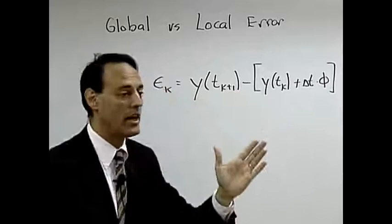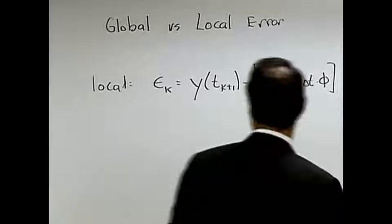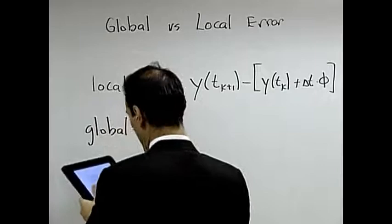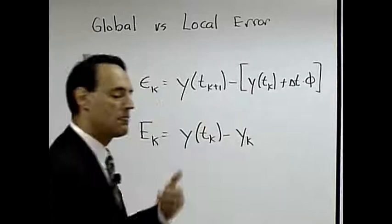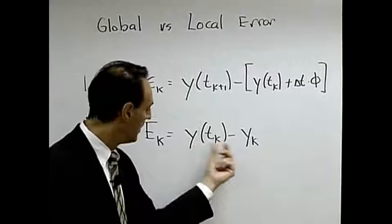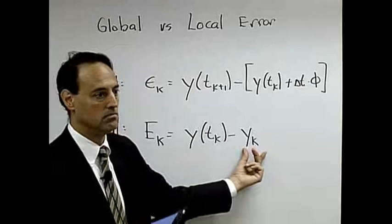The global error, big E, is what we're mostly interested in, which is the following: I choose a time into the future, t of k. This is my exact solution, this is my iterative solution.